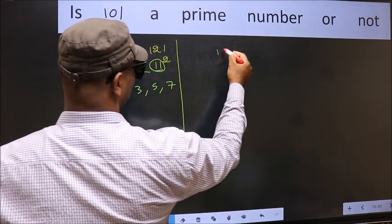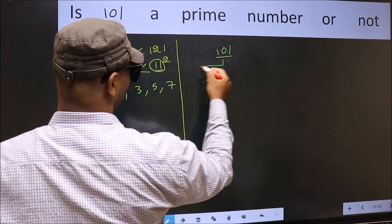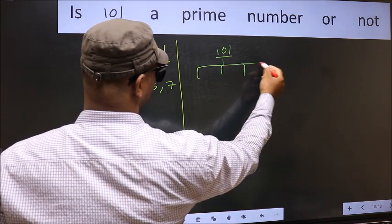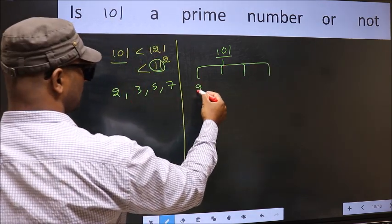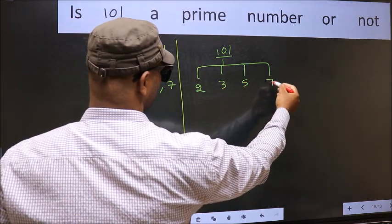Now for the given number, check divisibility by these numbers. That is 2, 3, 5 and 7.